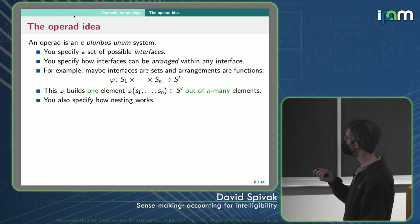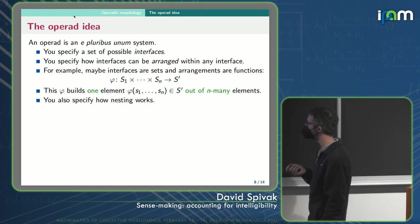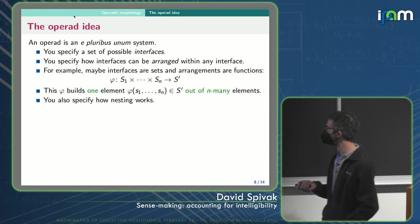Okay. So we have these, maybe the interfaces are sets, and the arrangements are functions. So here we're building one element, phi of S1, S2, SN in S prime out of many elements, S1 through SN. And so this system of building one thing out of many is what operads are about.